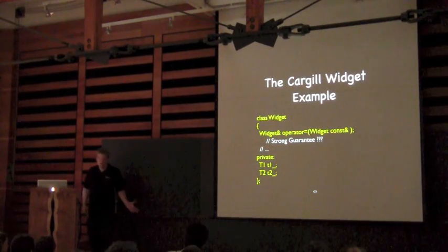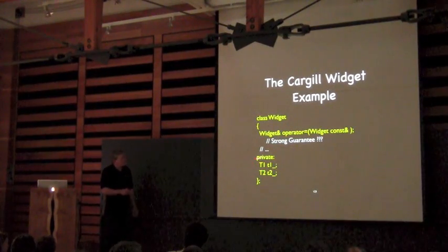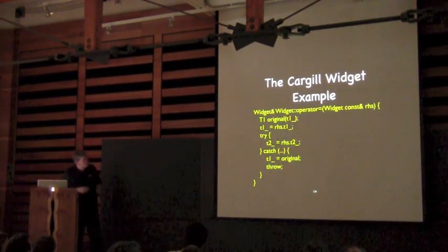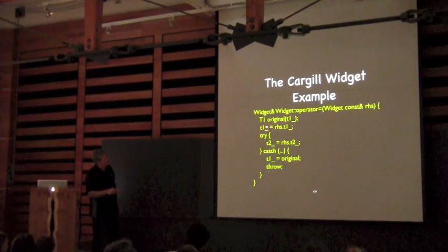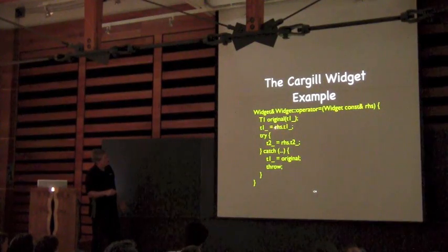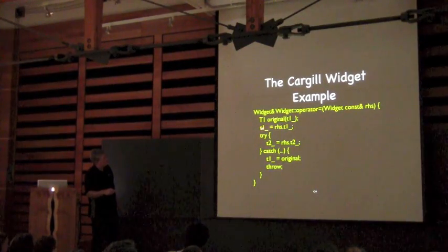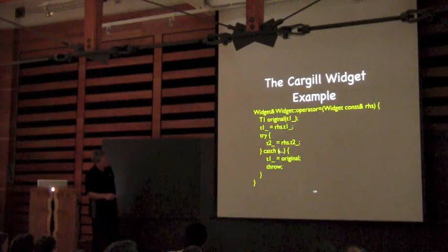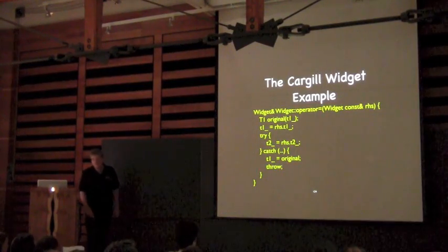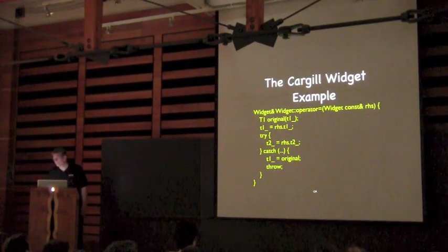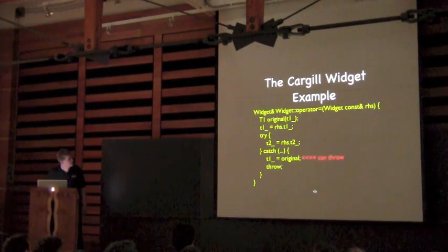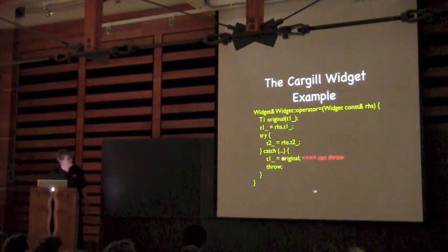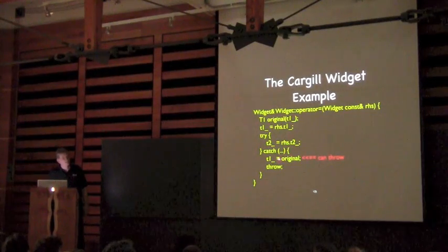The solution seems easy: just remember what the original T1 was and restore it if T2 throws. So we capture the original T1, change T1 by updating it, then if the T2 assignment throws, we catch it and restore T1. But it doesn't scale well — this restore itself can throw. If the restore throws, we're back to the same problem. So now we need to capture both original T1 and original T2.